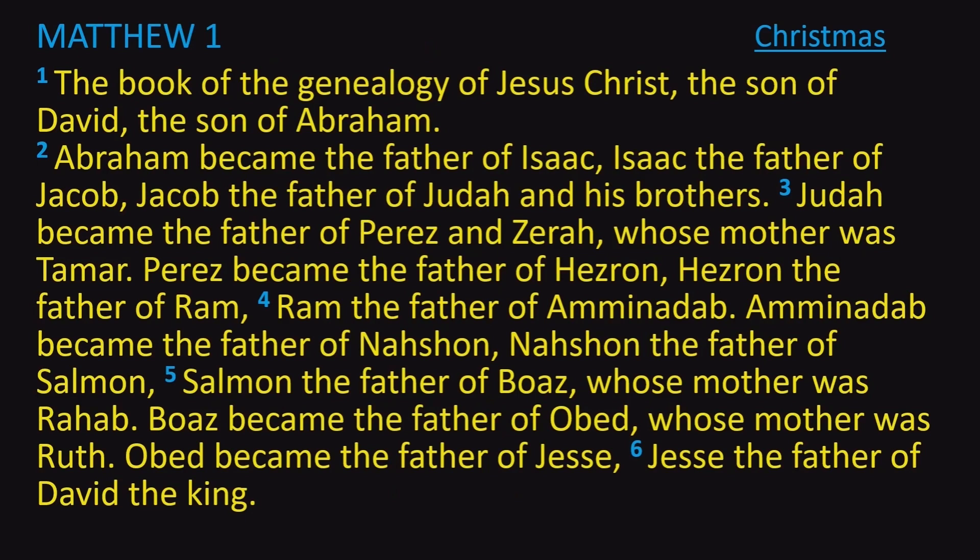Matthew wrote his Gospel to a Jewish audience. Mark wrote to the Romans, the Gentiles, while Matthew is writing to the Jewish people. It was important that Matthew shows the key people in Jesus' ancestry that proved proper lineage for Jesus to be considered the Messiah. So Matthew starts out by making the link across the centuries of Jesus to David and to Abraham.